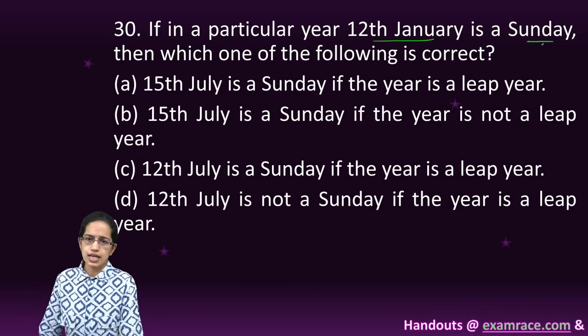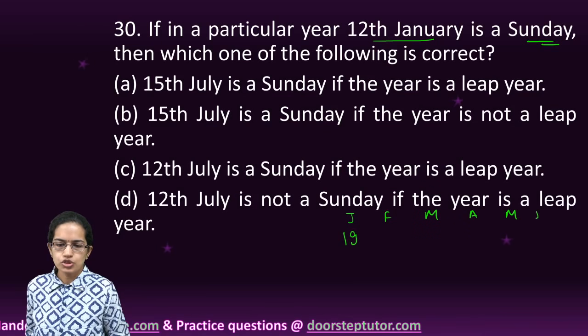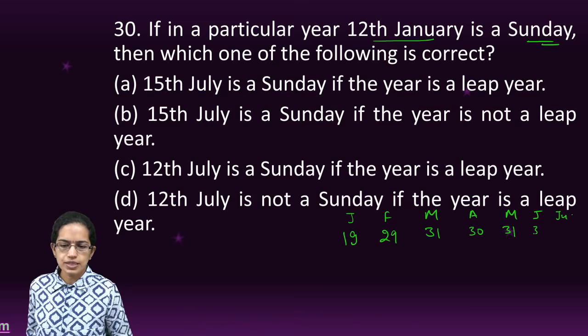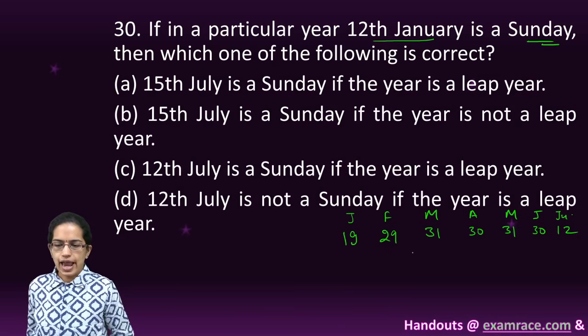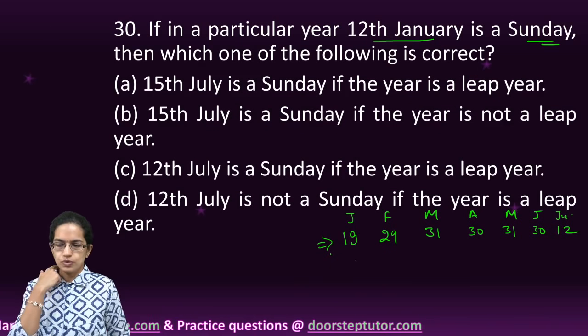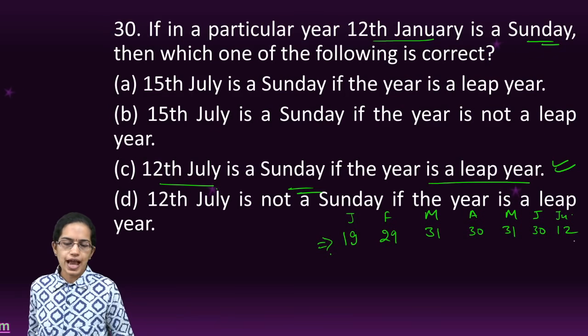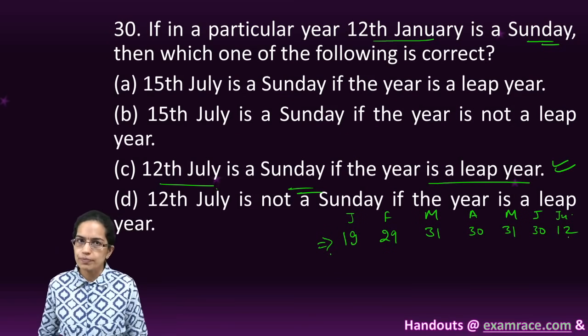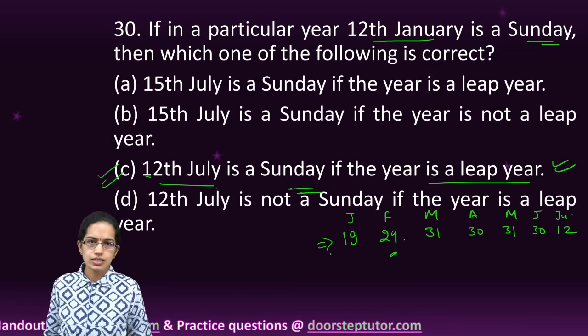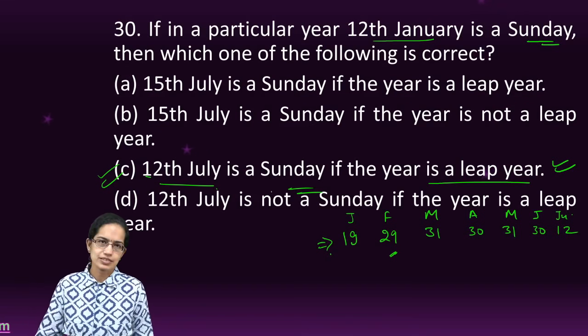The next is 12th January is a Sunday. Consider it to be a leap year. So you would have 19 days in January, then February, March, April, May, June and July. So 19 plus 29 plus 31 plus 30 plus 31 plus 30 plus 12. When I add these, this gives me a number which is wholly divisible by 7. That means 12th July is a Sunday if the year is a leap year.